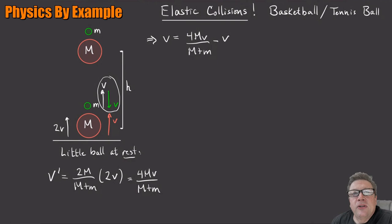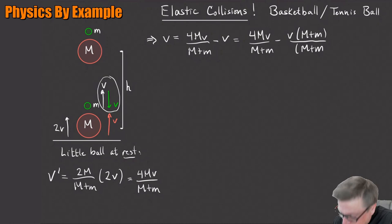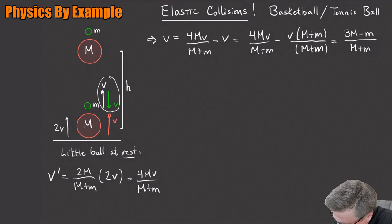I want to get this all in terms of V. All right. So let's rewrite this in a little bit better way. So I'm going to have 4MV over the sum of the masses minus V. I'm going to multiply by the denominator in a well-chosen one. So I'm going to have this on the top and then this on the bottom. All right. So I can subtract these two things. And what I'm going to be left with when I do this, 4MV minus MV. So I'm going to factor out the V. So it's 3M minus m times V like that. All right. So there I go. So there's the speed of the little ball.